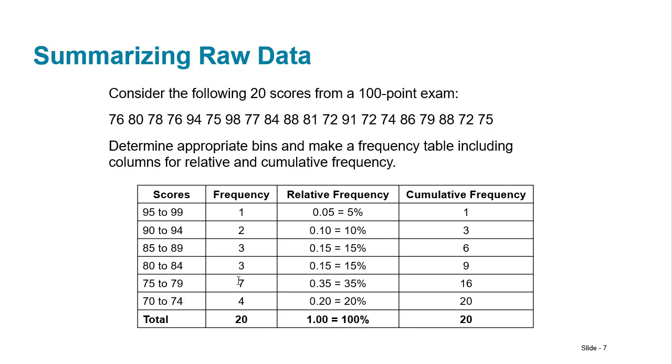But in any case here are your frequencies right? There's one score in this range, two in this, three and so on and so forth. Here are the frequencies because out of 20 you just do 4 divided by 20 it is 20%. 7 divided by 20, 35% and so on and so forth. And then the cumulative frequency. So here's 1 and then 1 plus 2 is 3 and 3 more is 6 and then you can see the last one is 20.